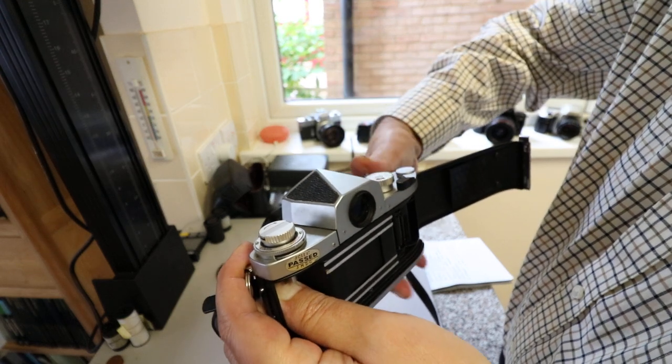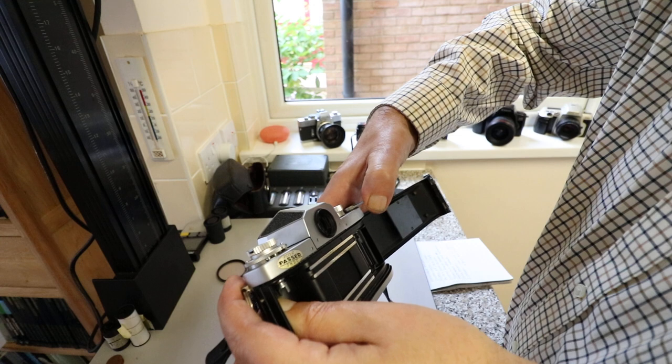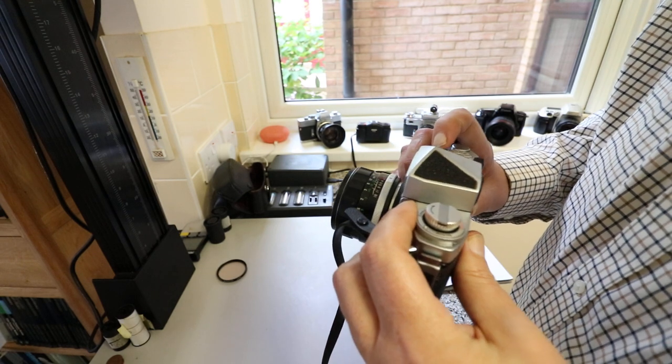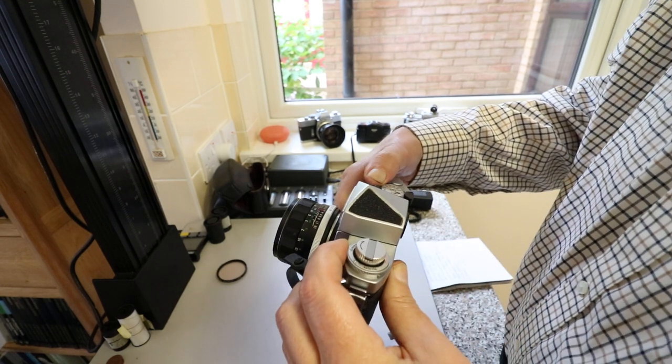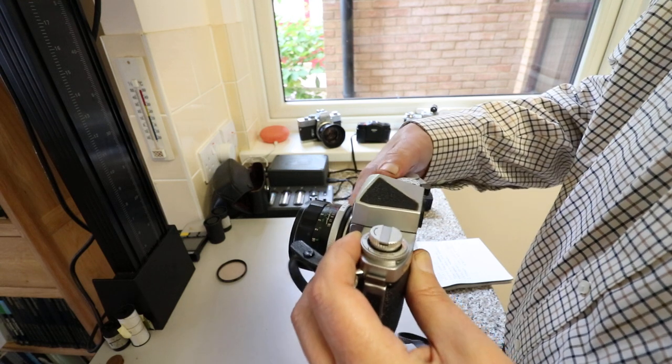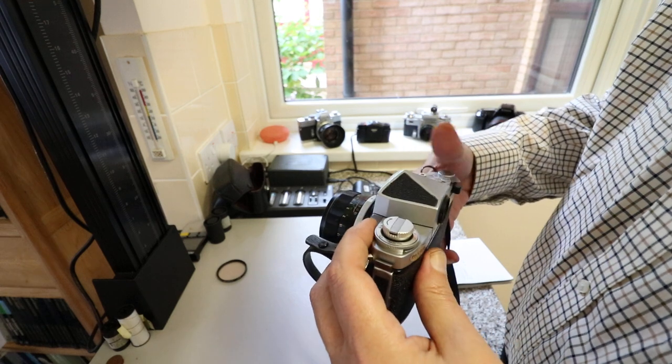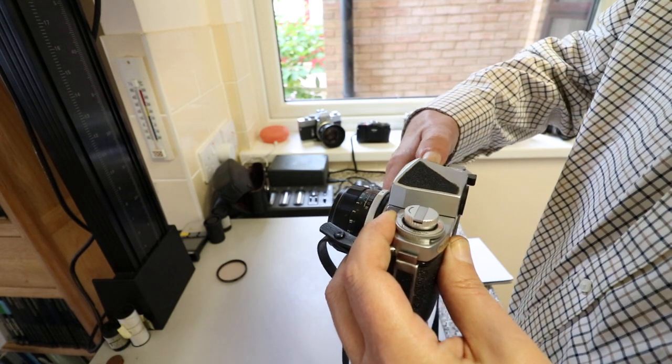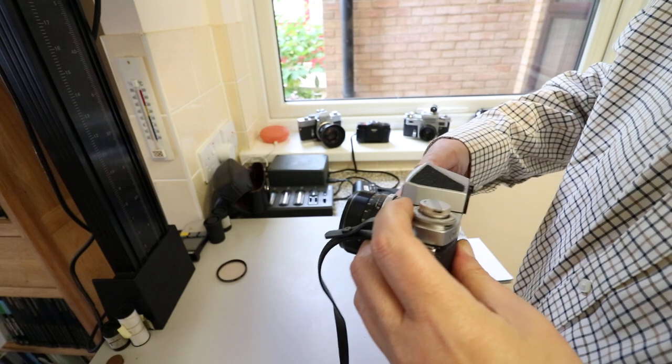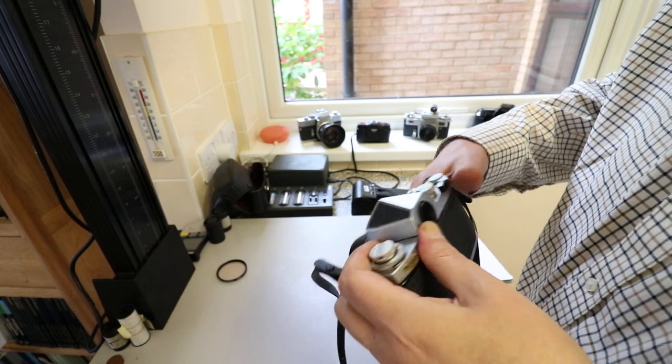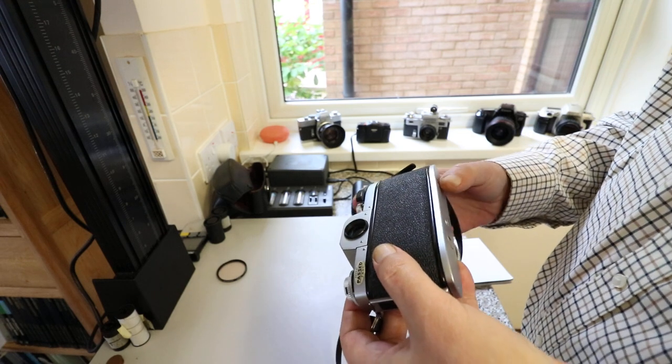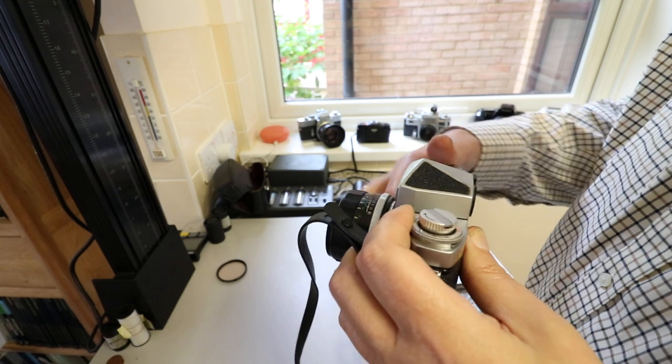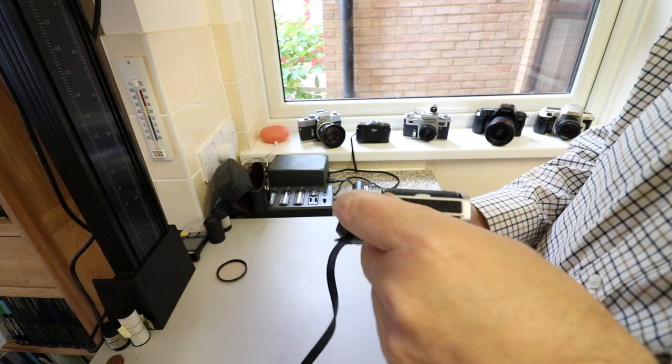Cloth focal plane shutter, horizontally traveling. We set to 500. It won't let me fire the shutter with the back open. That's a bit strange. That won't fire at all. This is another video that's going really well. That's strange.